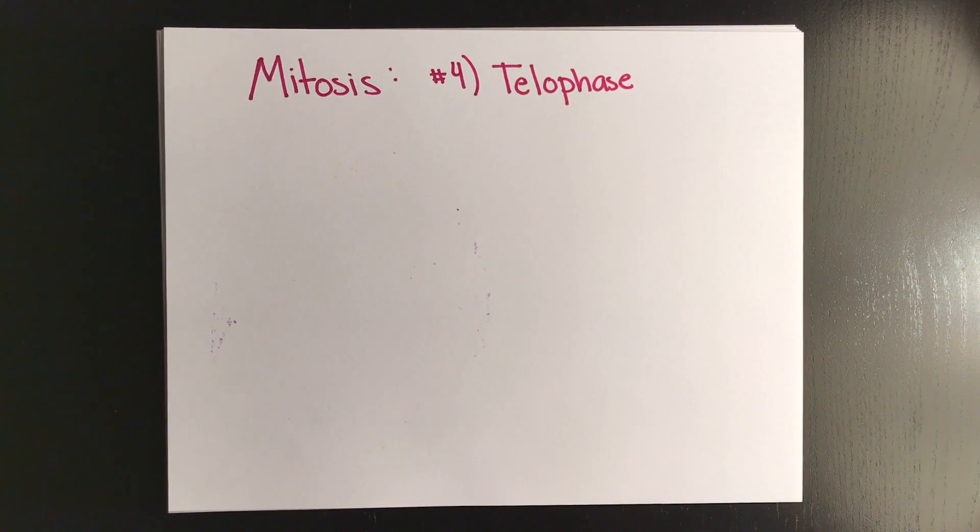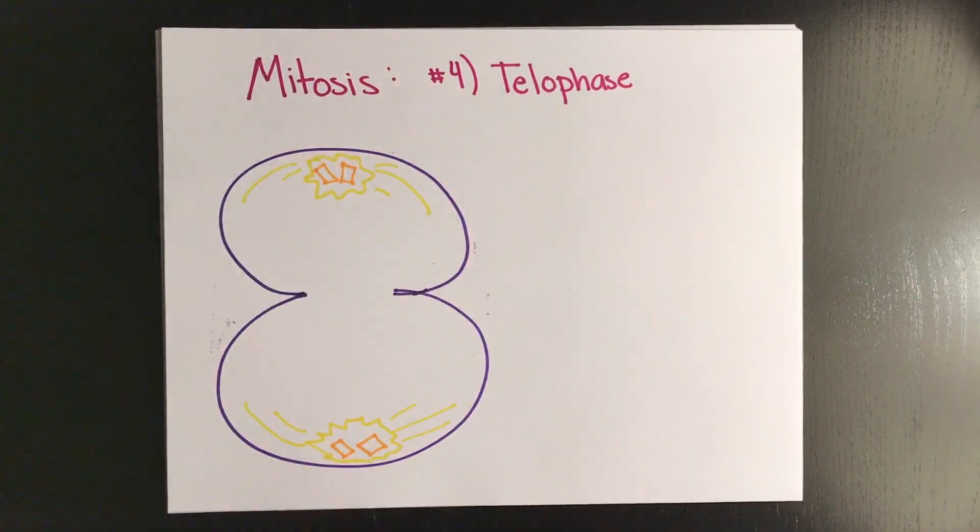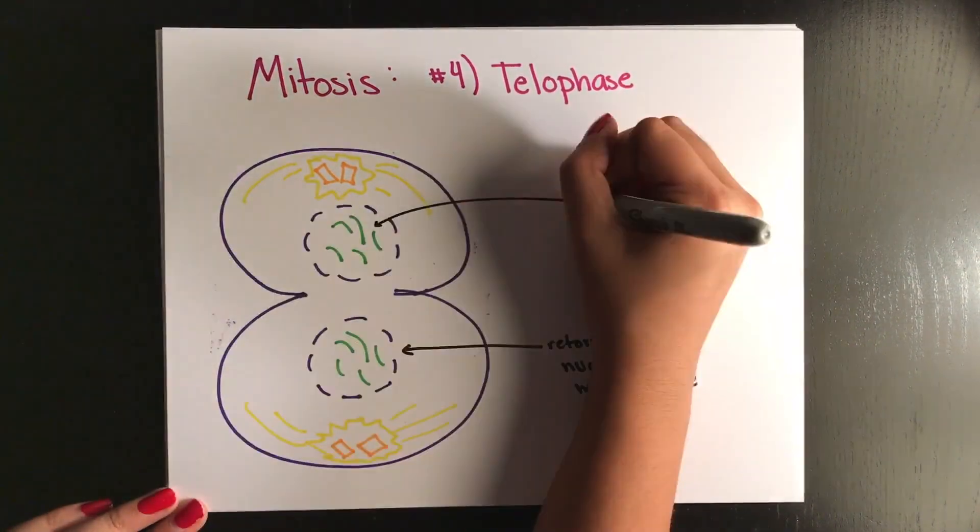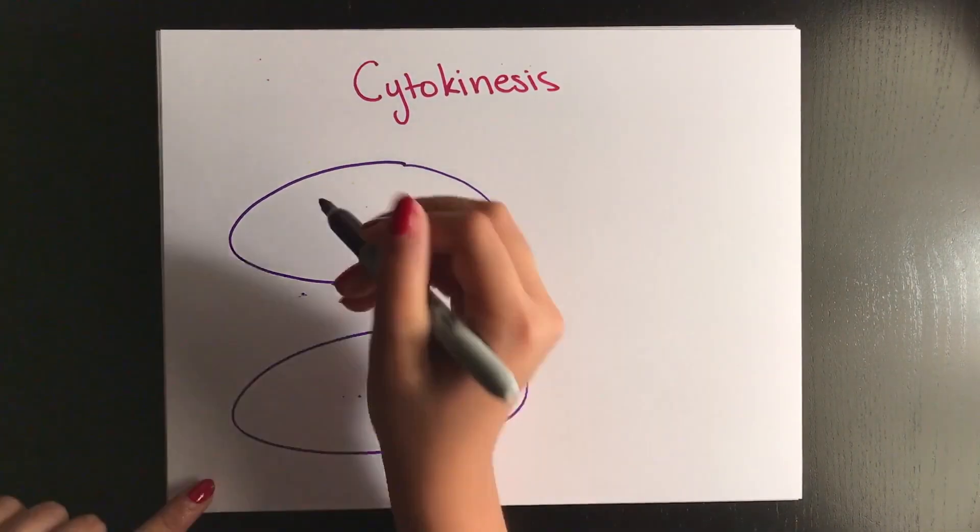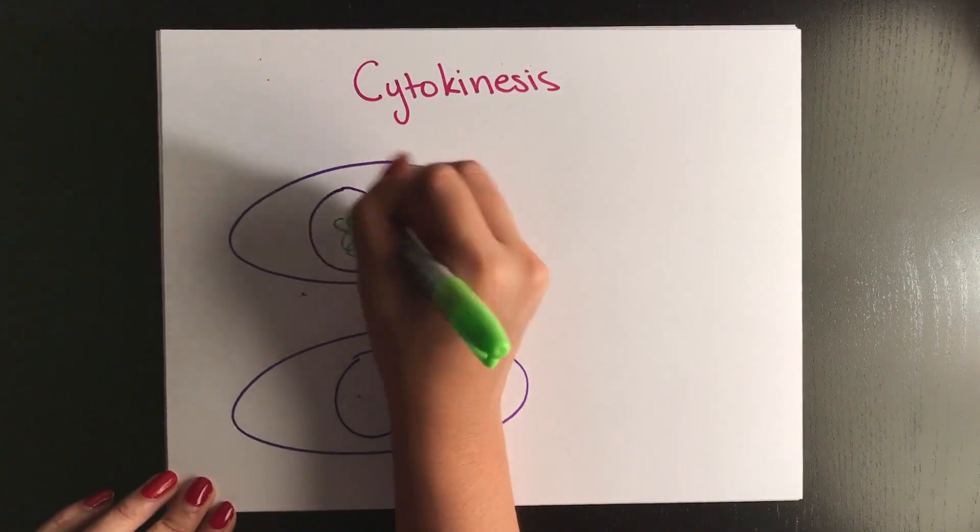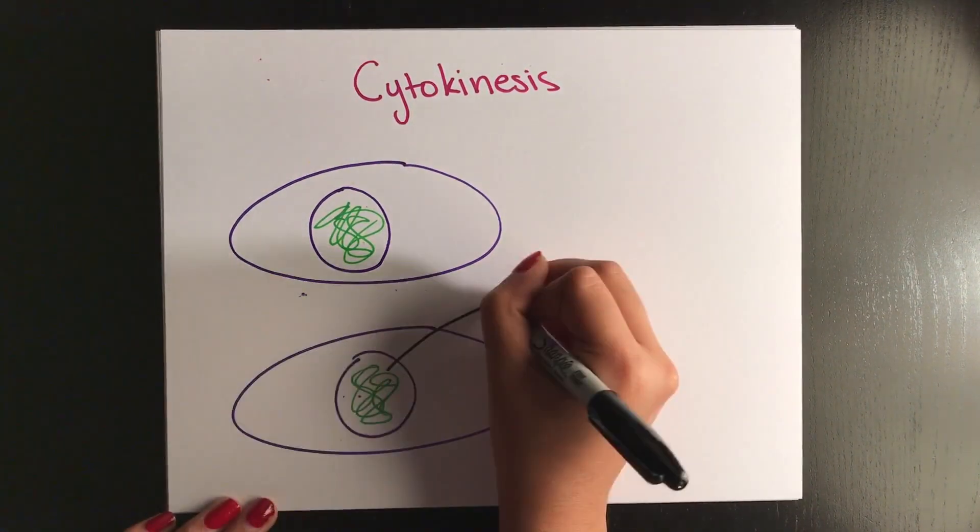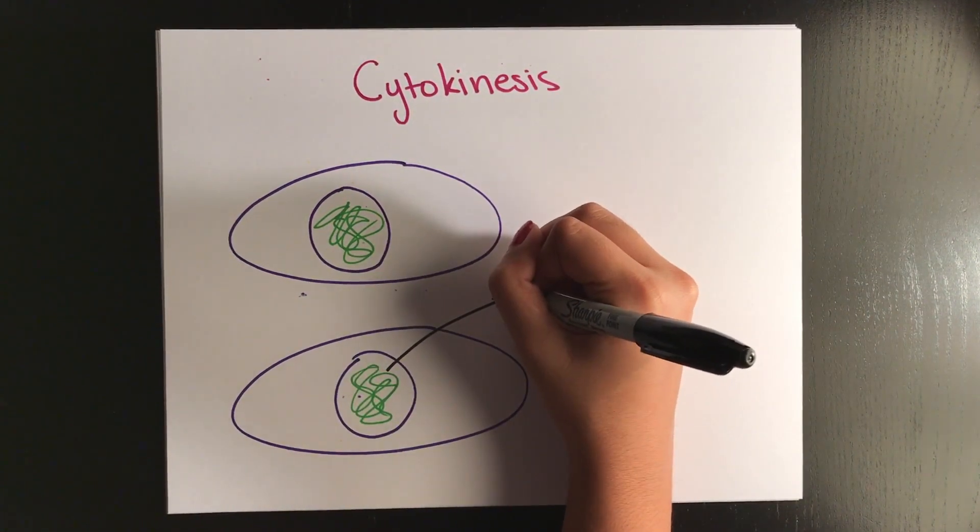The last step is telophase, during which the nuclear membrane forms around each new cell. The cytoplasm divides during cytokinesis, and a lot of books will tell you that mitosis and cytokinesis are separate, but usually cytokinesis will overlap just a little bit with telophase.